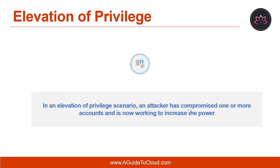In an elevation of privilege scenario, an attacker has compromised one or more accounts and is now working to increase his or her power. In Microsoft 365, the target is usually global administrator privileges, but specific service privileges are also desirable. For example, if the initially breached account is a regular user, the attacker can try to get that account promoted to global administrator, or use it to steal other accounts with administrative privileges. If an administrator shares the same machine and it gets compromised, the attacker can log onto that machine and run a credential harvesting tool, then use those credentials to access the system with administrator privileges.